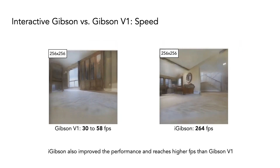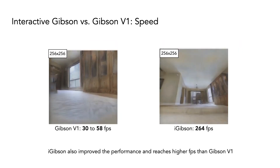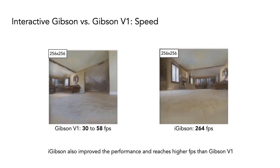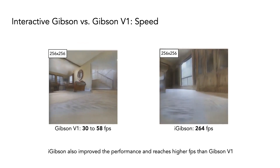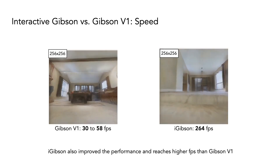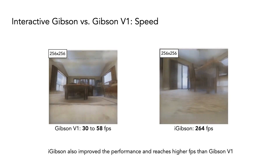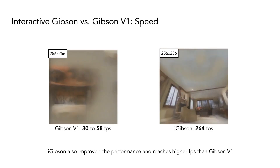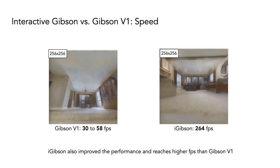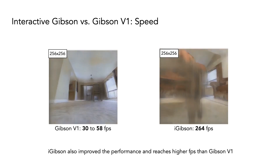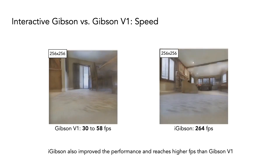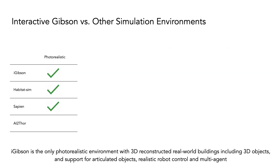In iGibson, not only has the physics realism improved, we also improved the rendering speed. We increased the rendering speed by 4x compared to our previous version. For policy training with RGBA 640x480 pixels on a single GPU, this is between 400 and 600 frames per second, thanks to a direct GPU-to-GPU bridge.